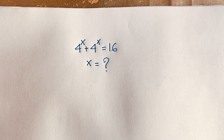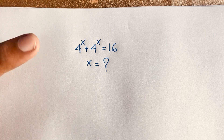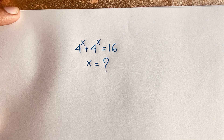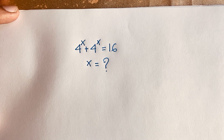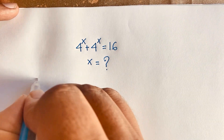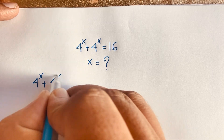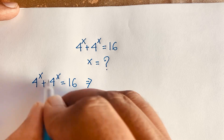Hello everyone. In this video we solve this interesting exponential equation: 4 to the power x plus 4 to the power x is equal to 16. What is x? Let's start. Our question is 4 to the power x plus 4 to the power x is equal to 16.